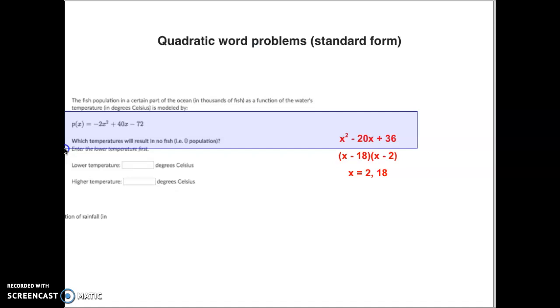Then I just simply did my diamonds and my rectangles. I factored this - what are two numbers that multiply to positive 36 and add up to negative 20? Those two numbers would be negative 18 and negative 2. When I apply zero product property to those two factors, I get x equals 2 from this one and x equals 18 from this one. So those are my two limits, which means my lowest temperature is 2, my highest temperature is 18.